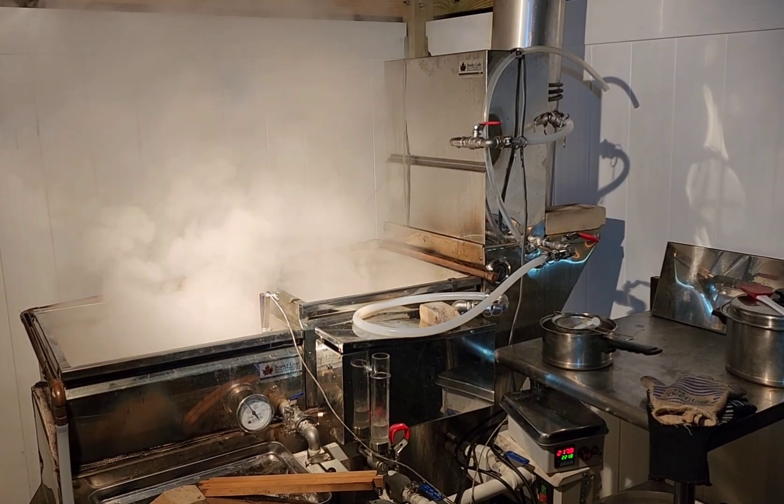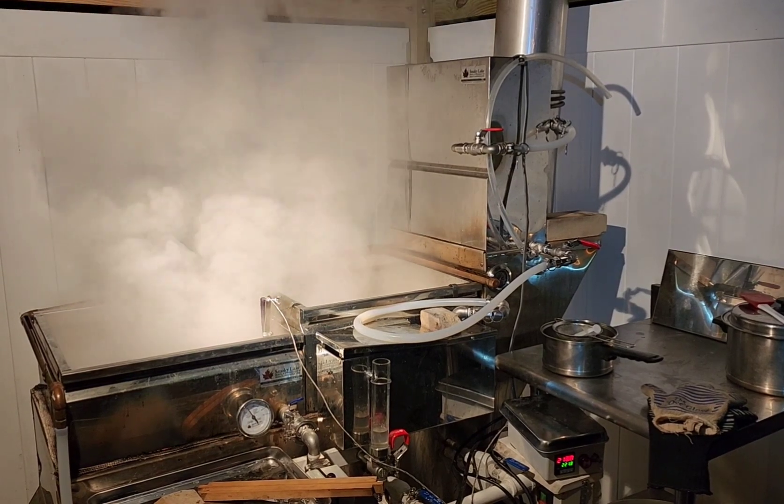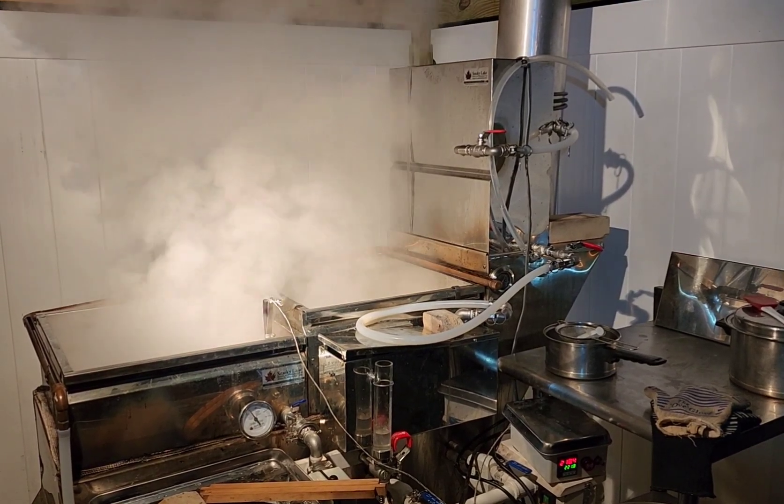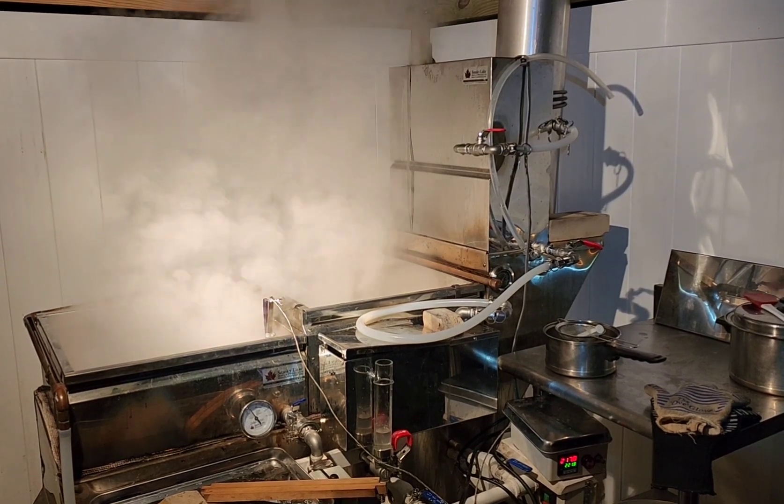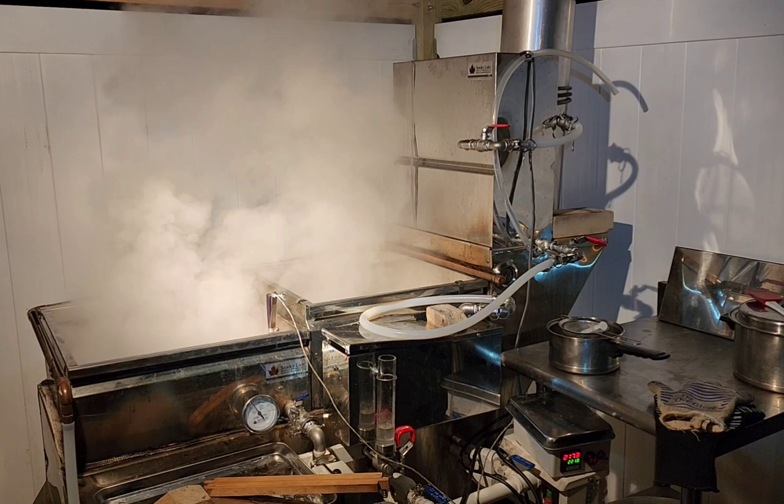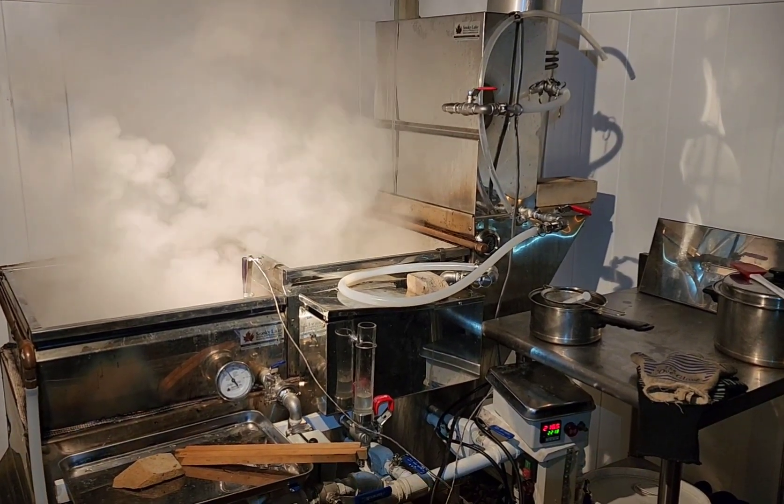The very top pan back there, that's a preheat pan in our head tank. That's where we feed sap in from our RO. And then there's a little tube that comes out over there on the side that runs down to our float box. Our float box over here is what controls the depth of sap in the pan.